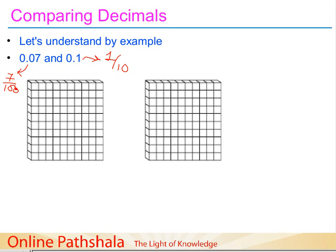If you have difficulty understanding how I converted these, please refer to my previous videos. After converting 0.07 to the fraction 7/100 and 0.1 to the fraction 1/10, I'll represent this using a block diagram. This is a block of 100 small squares — one single square consisting of 100 small blocks. 7 parts of 100 means covering 1, 2, 3, 4, 5, 6, and 7 blocks.